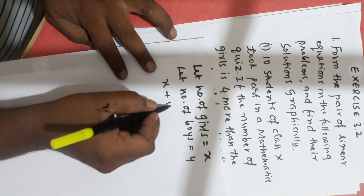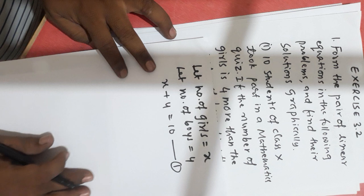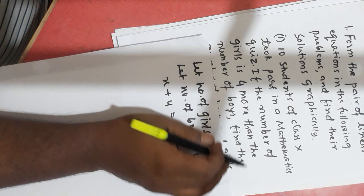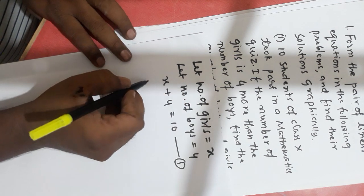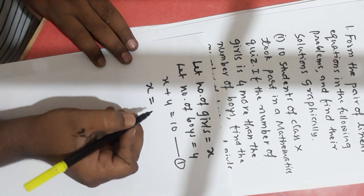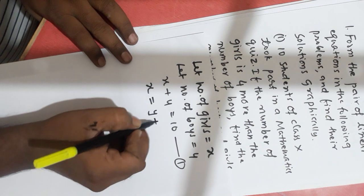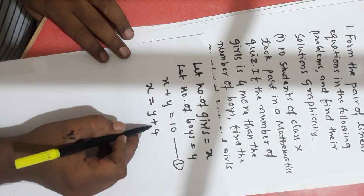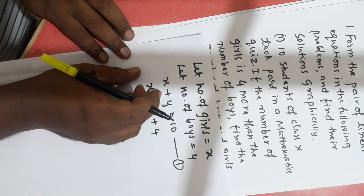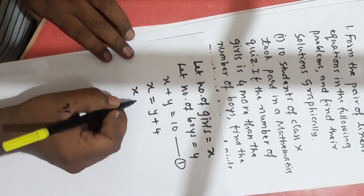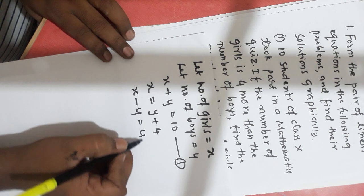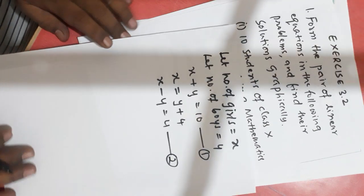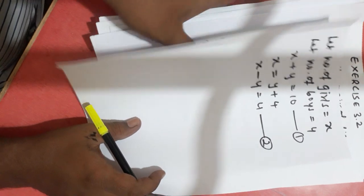We'll write the first equation: X plus Y is equal to 10. Another condition is given: the number of girls is 4 more than the number of boys, meaning X equals Y plus 4, which can be written as X minus Y is equal to 4. This will be the second equation. We now have two equations.